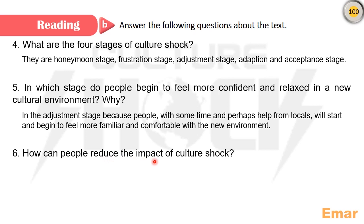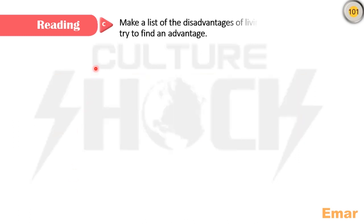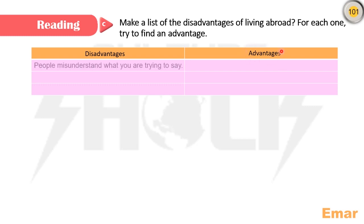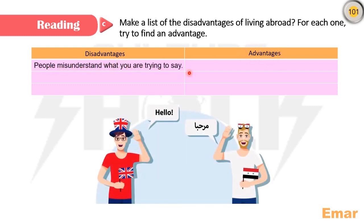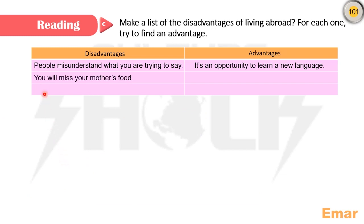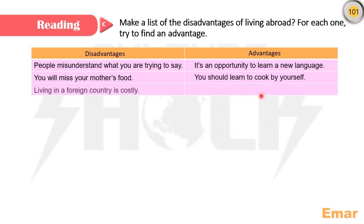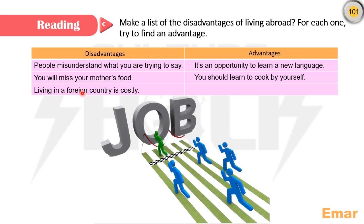How can people reduce the impact of culture shock? Everyone has to find his or her own balance between the values of their home country and those of the host country. Exercise C, page 101: make a list of disadvantages of living abroad. For each one, try to find an advantage. Disadvantage: people misunderstand what you are trying to say. Advantage: it is an opportunity to learn a new language. Disadvantage: you will miss your mother's food. Advantage: you should learn to cook by yourself. Disadvantage: living in a foreign country is costly. Advantage: you will have to find a part-time job.